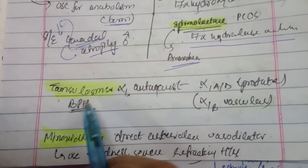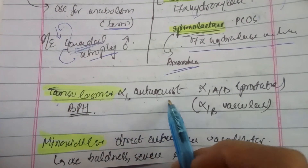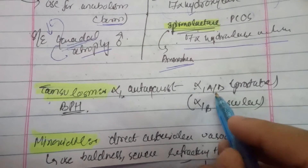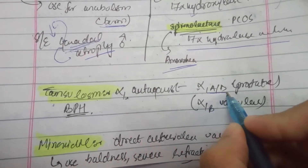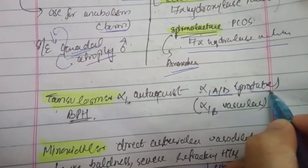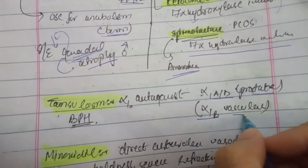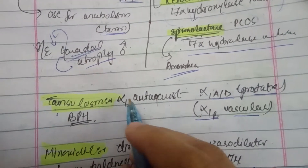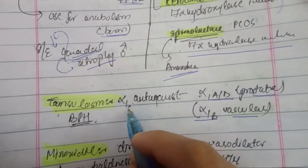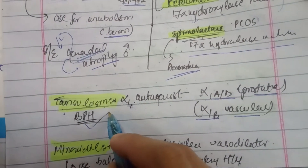Tamsulosin is a selective alpha-1 antagonist. It selectively targets alpha-1 subtypes A and D, present in the prostate, but not alpha-1B, which is present in blood vessels. It inhibits smooth muscle contraction and is used in BPH.